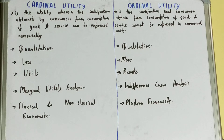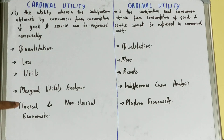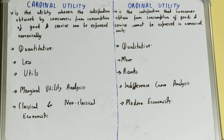Cardinal utility is promoted by classical and neoclassical economists, but ordinal utility is promoted by modern economists. This was all about the difference between cardinal utility and ordinal utility.